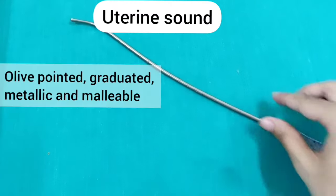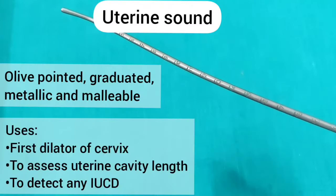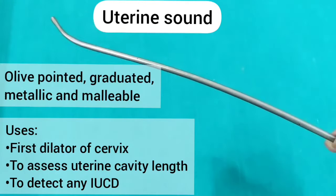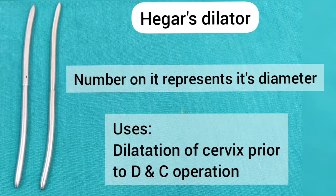Uterine sound. It is an olive-pointed, graduated, metallic and malleable instrument. It is used as a first dilator of the cervix, to assess the uterine cavity length, and to detect if there is any IUCD. Hegar's dilator — the number on the dilator represents its diameter. It is used in D&C.